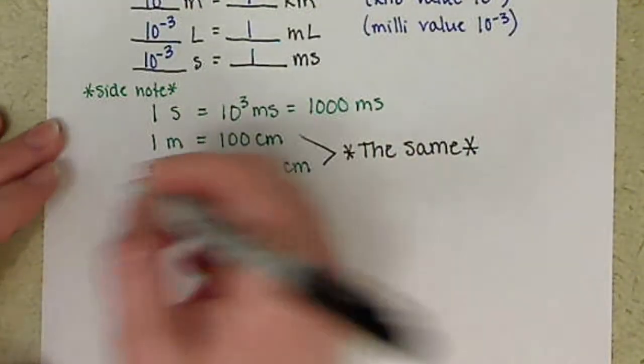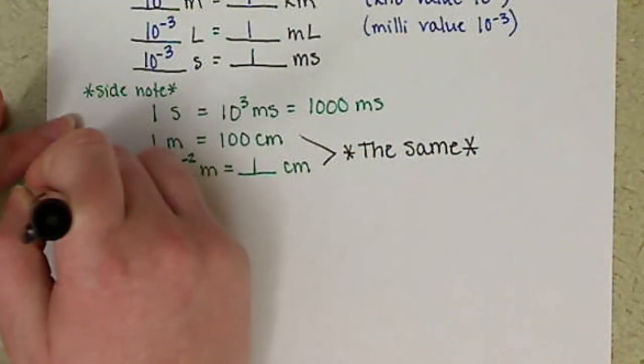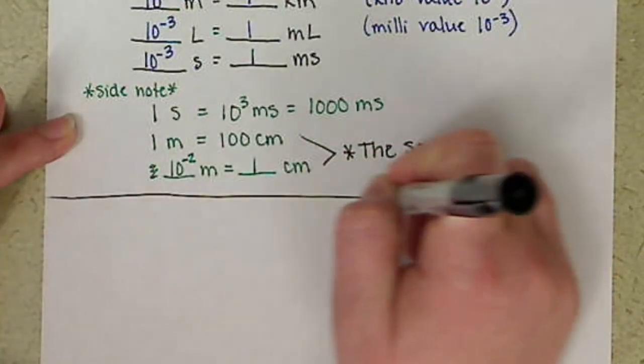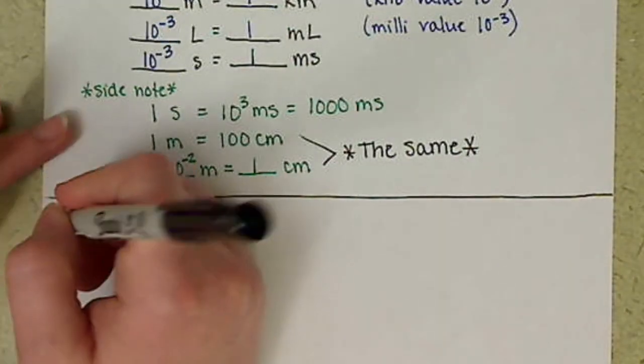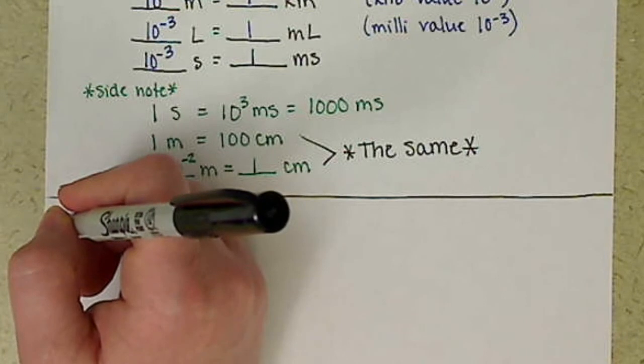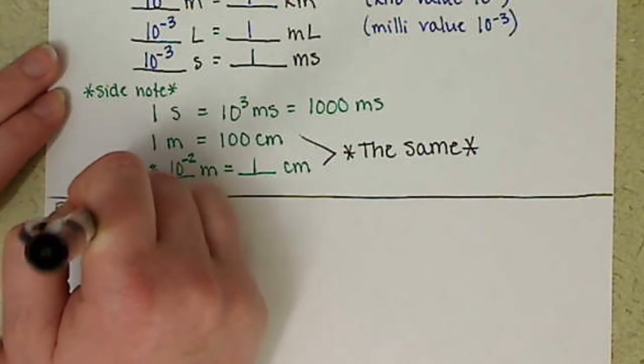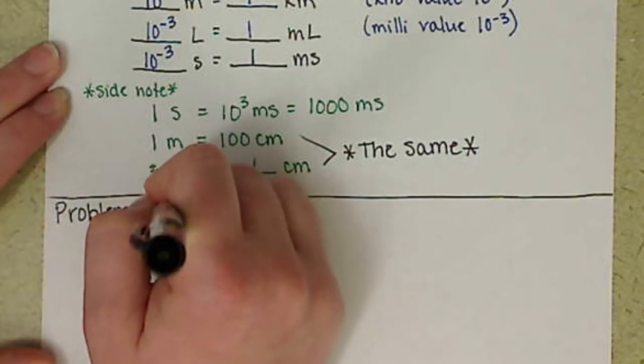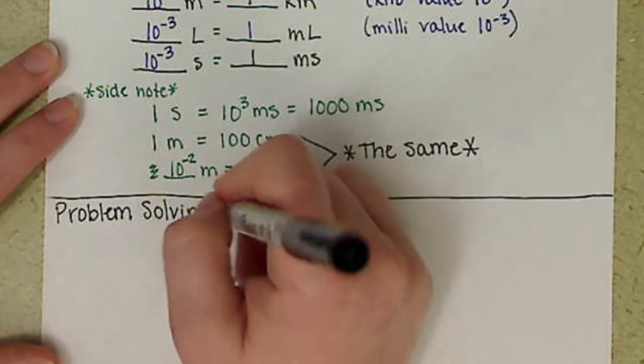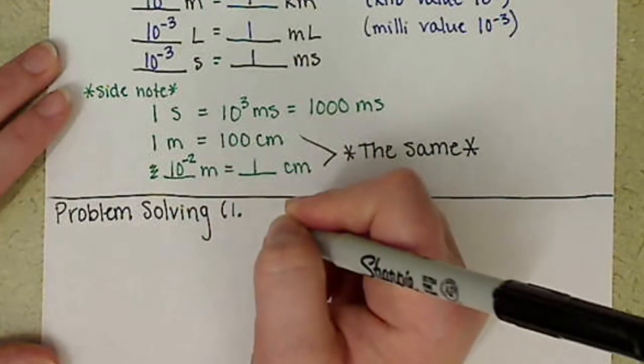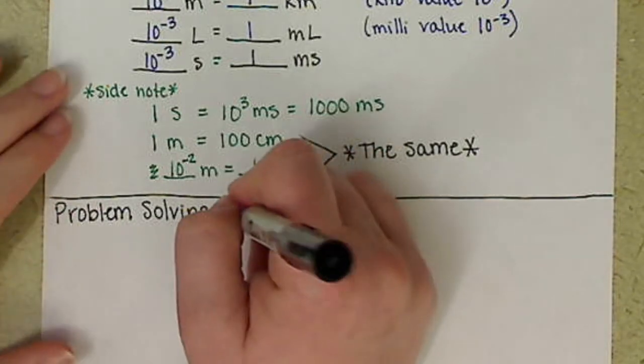Alright, so we've covered sections 1.7 and 1.8, talking about prefixes and equalities and writing conversion factors. Now we're going to go through some problem-solving. This is section 1.9.